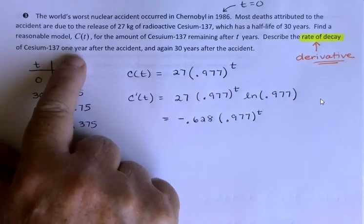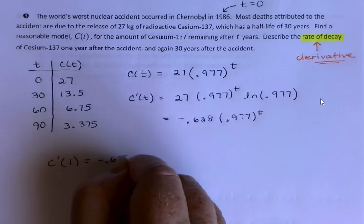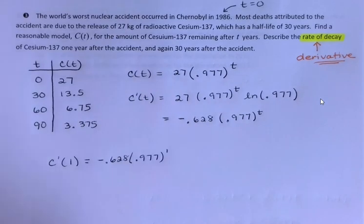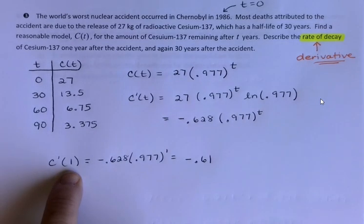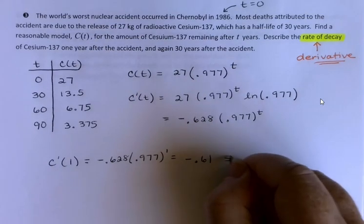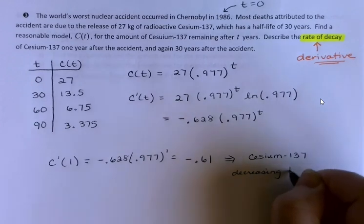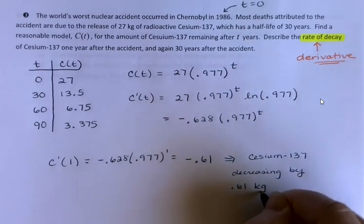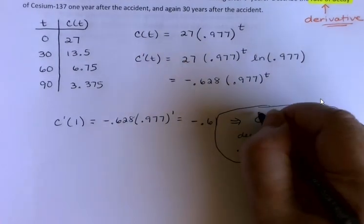And I now want the rate of decay, or derivative, specifically 1 year and 30 years after the accident. So C'(1), negative 0.628 times 0.977 to the first power, is about negative 0.61. So one year after the accident, or in 1987, the amount of cesium is decreasing at the rate of 0.61 kilograms per year.